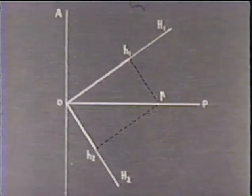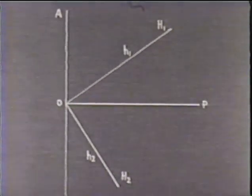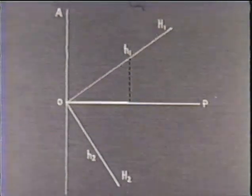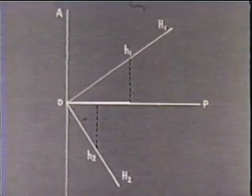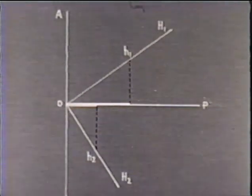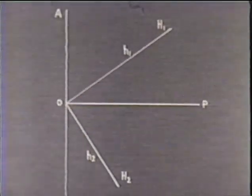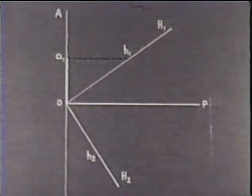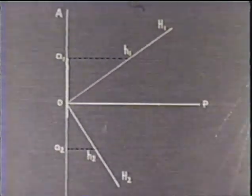Each of these beams can in its turn be resolved into components. Those parallel with OP are extinguished by the analyzer and do not interest us further. The other components are parallel with OA. They are OA1 and OA2 and are transmitted by the analyzer.